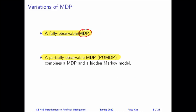The difference between the two variations is whether each state is observable by the agent. We already encountered a similar issue when we talked about a hidden Markov model. In the hidden Markov model, each state is not directly observable, but the agent can observe some noisy signal of each state.